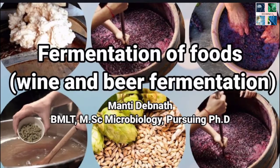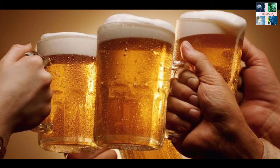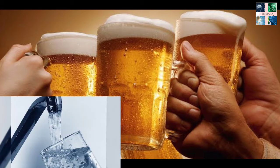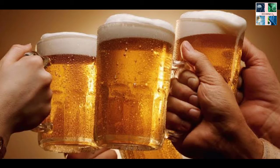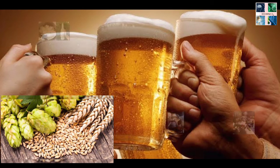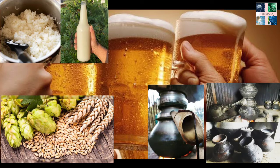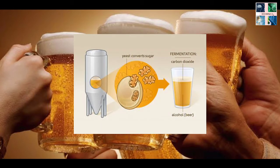Beer is one of the oldest and most widely consumed alcoholic drinks in the world and the third most popular drink all over the world after water and tea. It is produced by the brewing and fermentation of starches mainly derived from cereal grains — barley, wheat, maize, rice, or oats. During the brewing process, fermentation of the starch sugars in water produces ethanol and carbonation in the resulting beer.